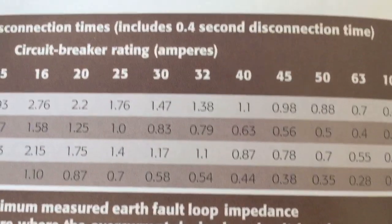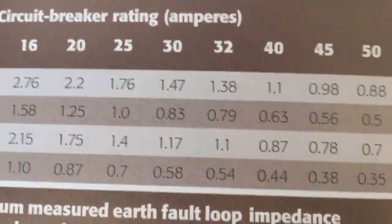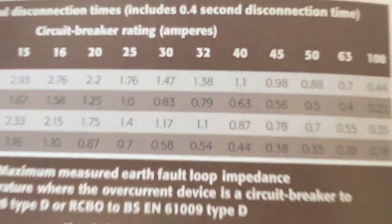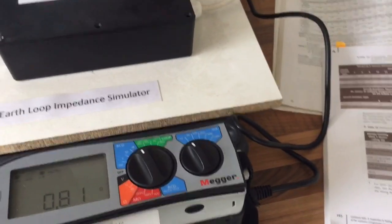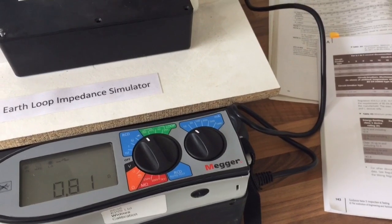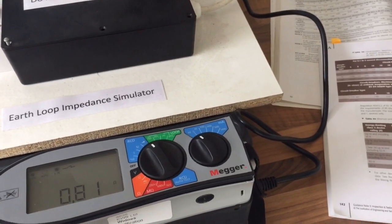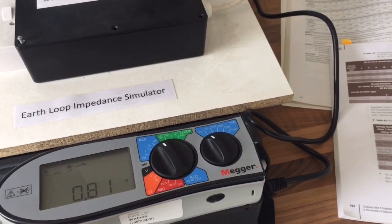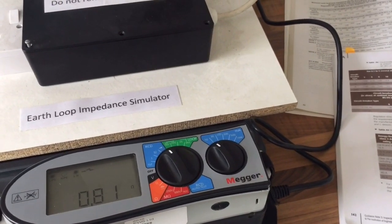Going back to the table, what we were after was 1.1Ω. What that means effectively is that if the earth fault loop impedance is less than that value, that circuit will operate in less than 0.4 of a second under earth fault conditions. That's the whole point of the exercise.